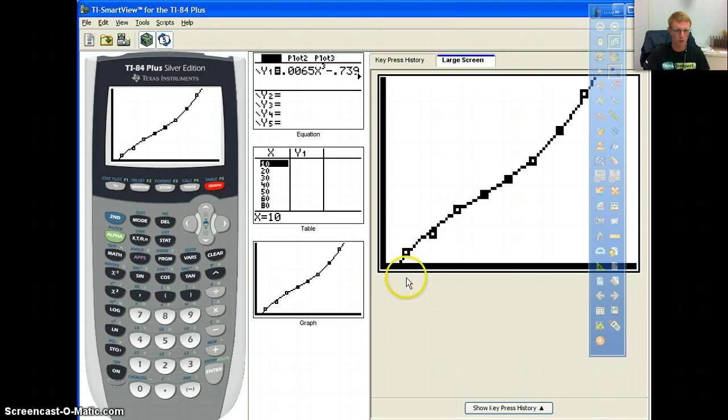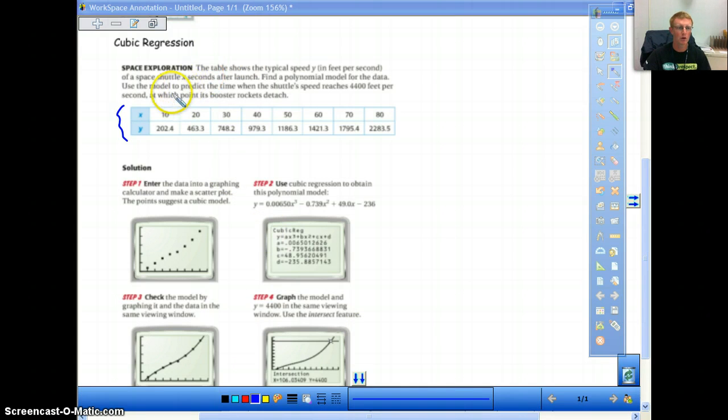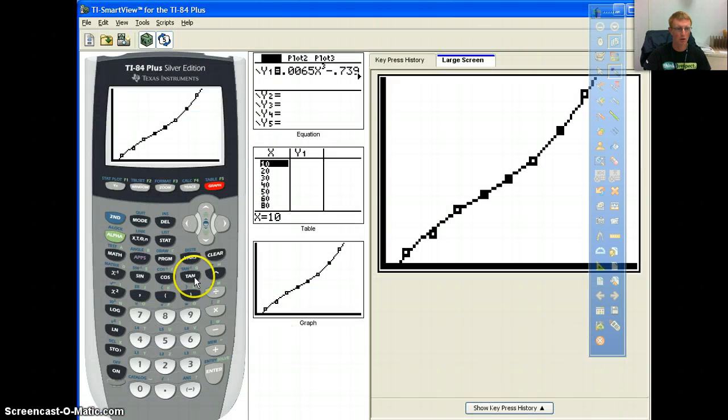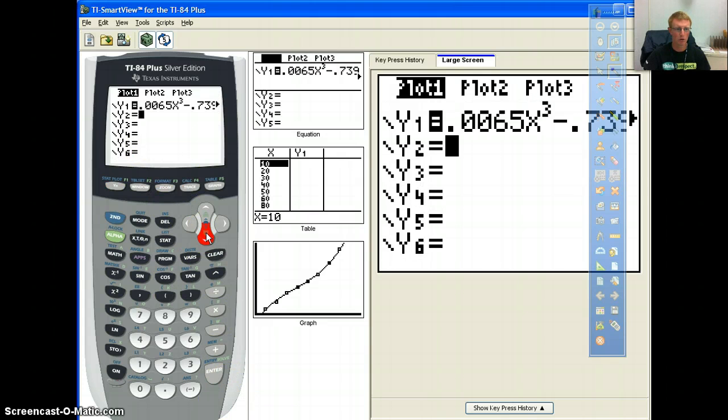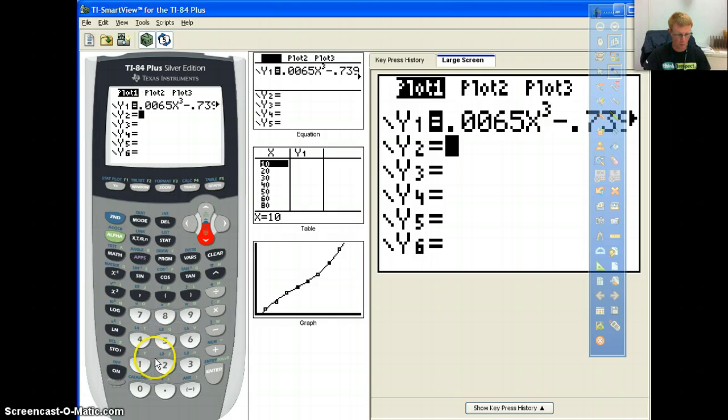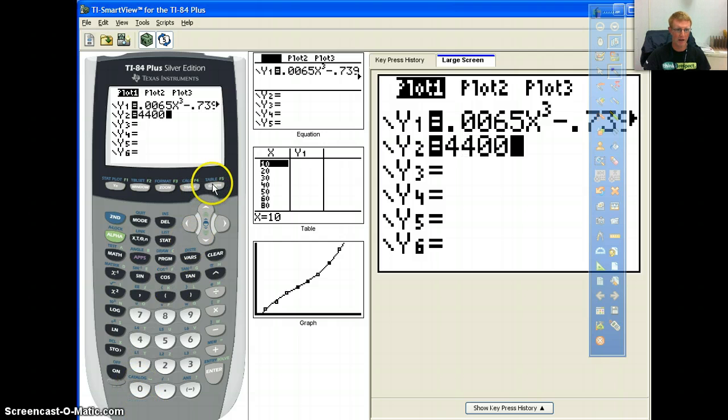Now the last step is, if you recall from the question, it wants to know, use the model to predict the time when the shuttle speed reaches 4,400. Well, the y value is our speed here. So what we want to do then is we're going to graph one more thing. We're going to go to y equals, and we are going to go down to our y2, and we are going to put in 4,400. And then we're going to graph, and you should see a vertical line go across here.